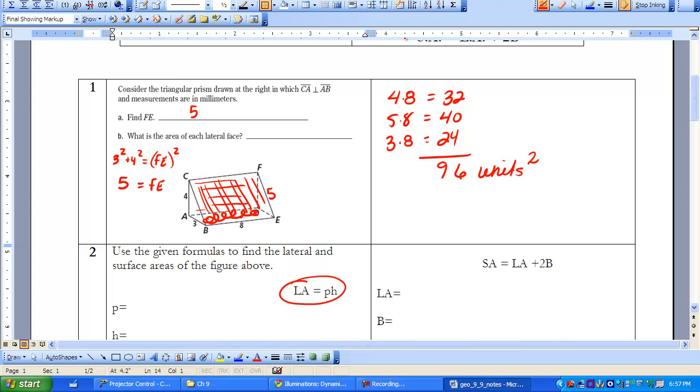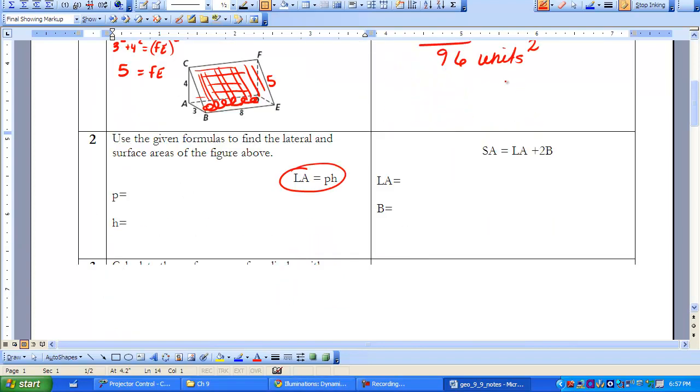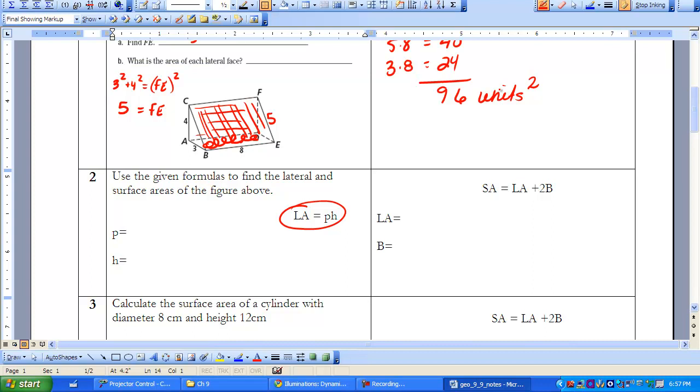Now we're going to use the formula and see how that all comes together. We're finding the perimeter. I like to do the calculations on the side first. 3 plus 4 plus 5 gives me a perimeter of 12 units. And the height of this prism is 8. So if we plug in our values, then lateral area is going to equal 12 times 8, which in fact does equal 96 units squared.